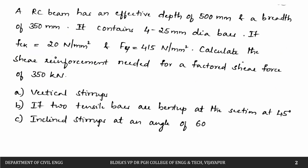In this problem we will consider three cases: first, designing vertical stirrups; second, providing two tensile bars bent up at 45 degrees; and third, inclined stirrups at an angle of 60 degrees. Let us start with the first case — vertical stirrups.